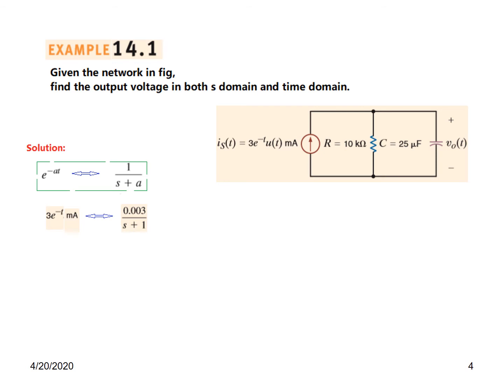The resistor will remain the same — no change in the resistor in time domain or in S domain. But the capacitor will change, and so we convert the capacitor in Laplace domain with zero initial condition to 1 over SC. Plugging in the value of C = 25 microfarad, this becomes 40,000 over S.